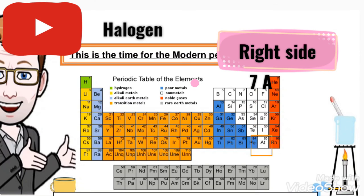In block P, we have the halogen, which is 17 in the modern periodic table, and it's considered group 7A.